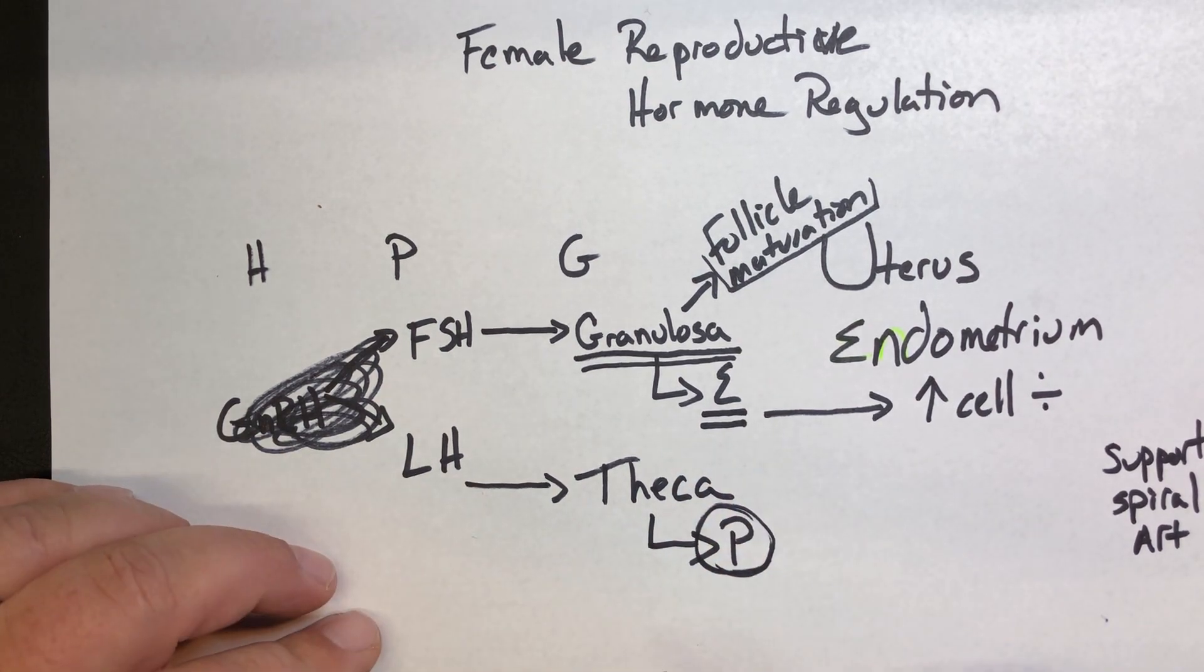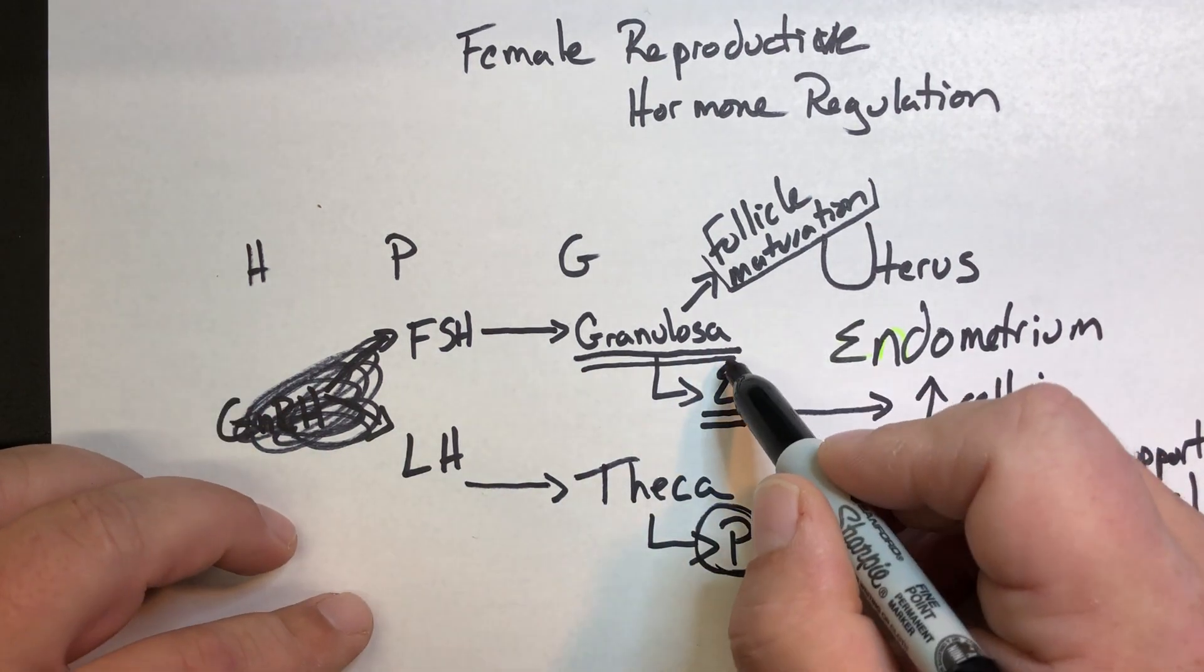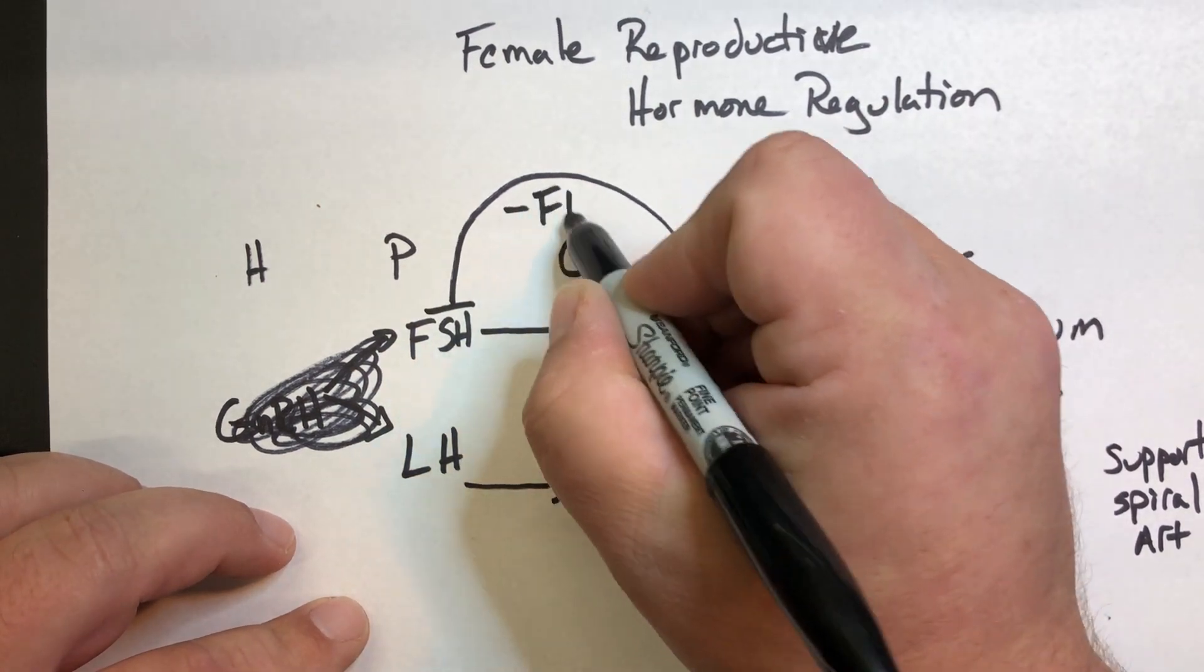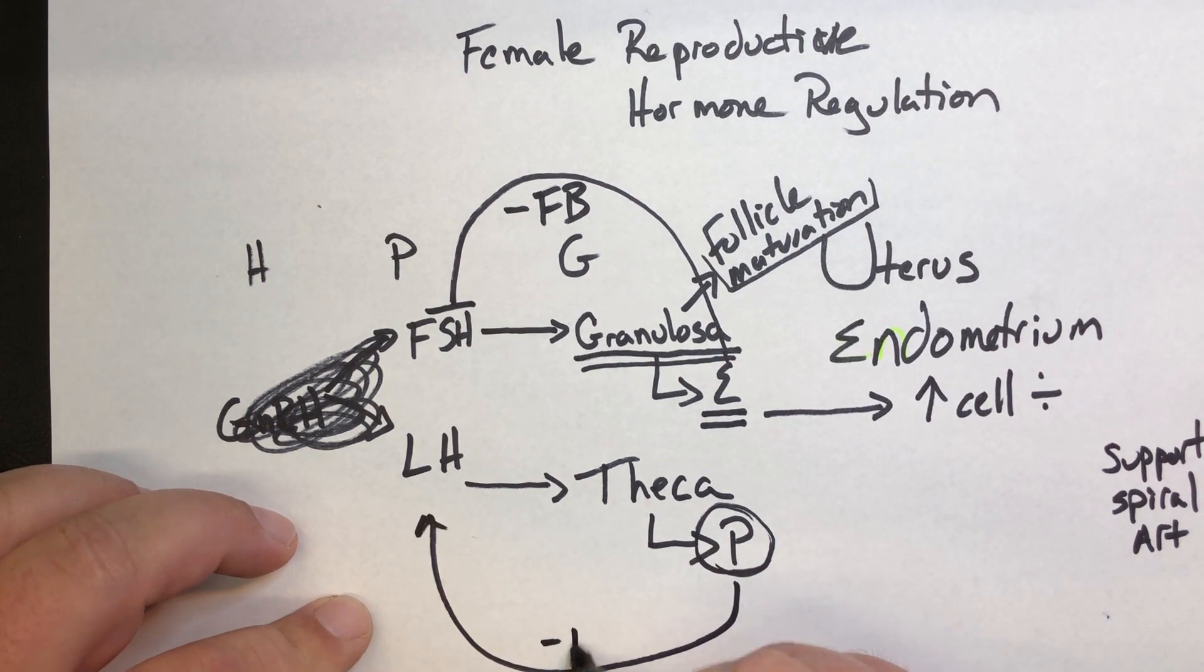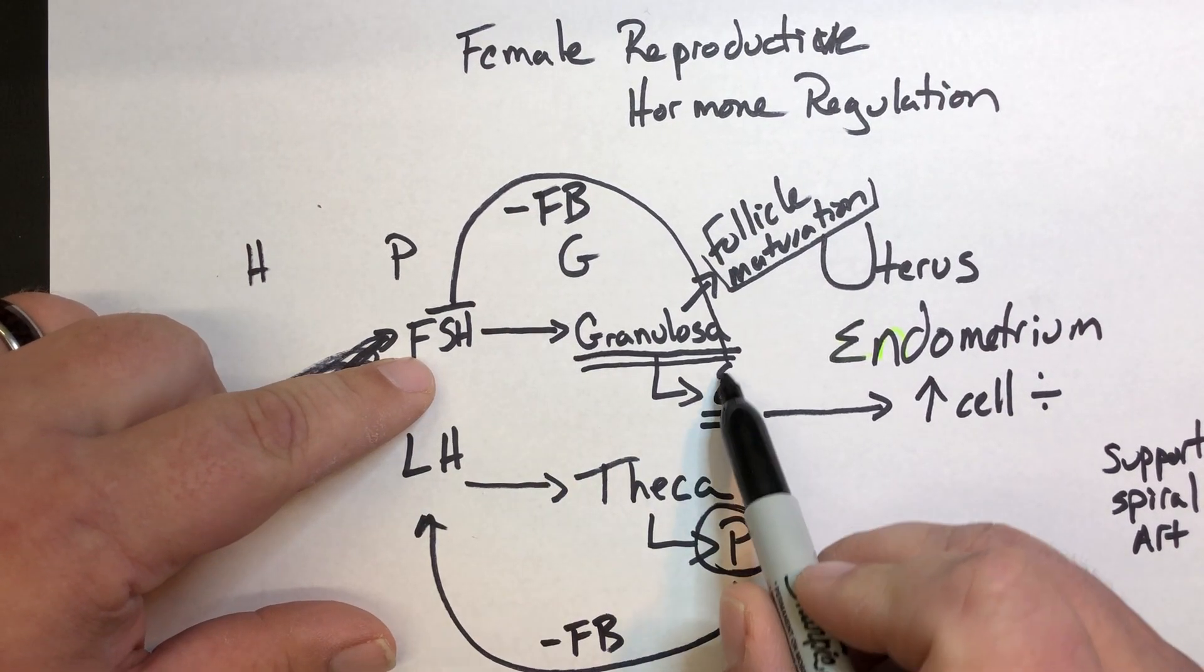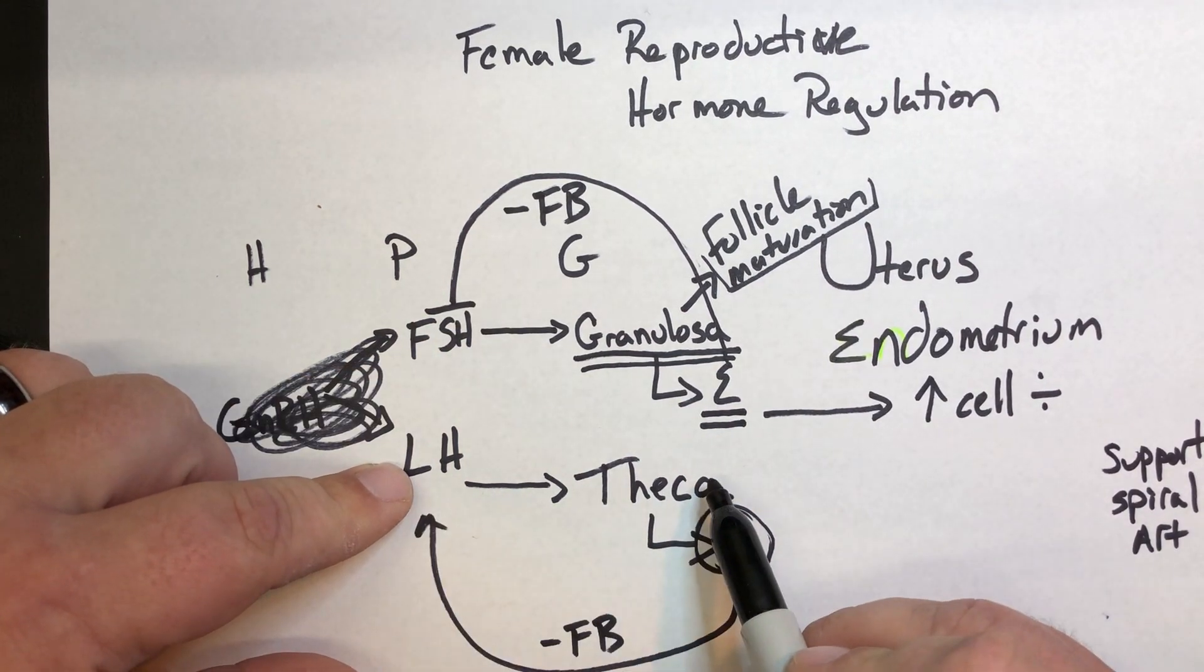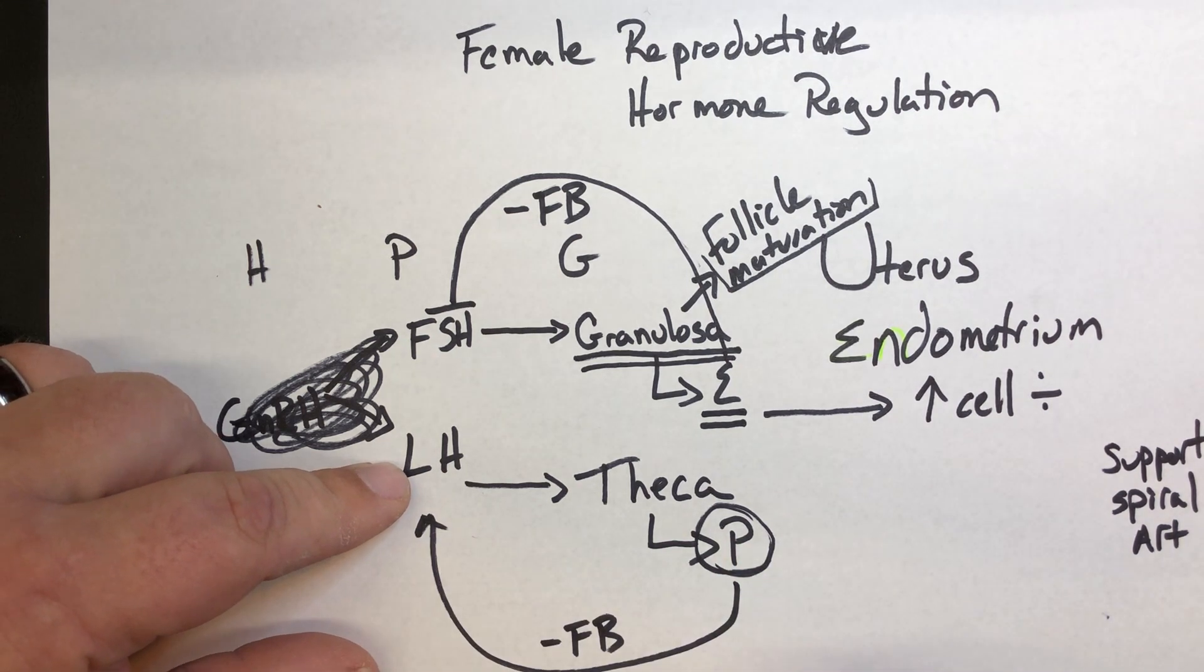In terms of regulation, estrogen kind of very directly has a negative feedback with FSH. Progestin very directly has a negative feedback on LH production. So picture we could go in order. As FSH goes up, estrogen goes up. As estrogen goes up, FSH goes down. Same with LH. LH goes up, stimulates the theca. Progestin goes up. As progestin goes up, it feeds back to LH production and LH production shuts down.